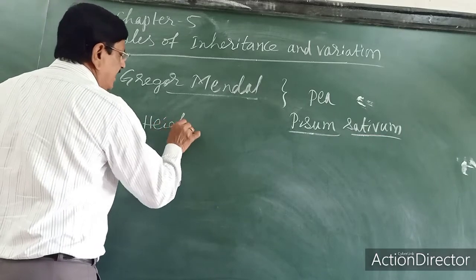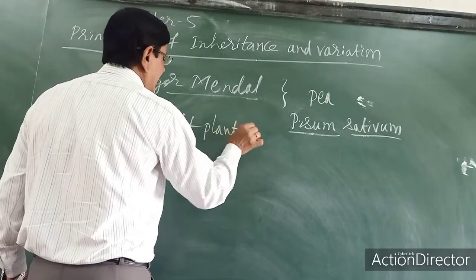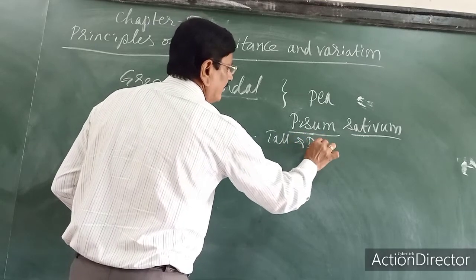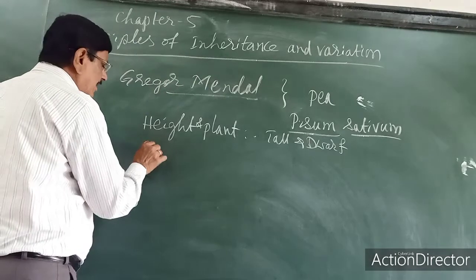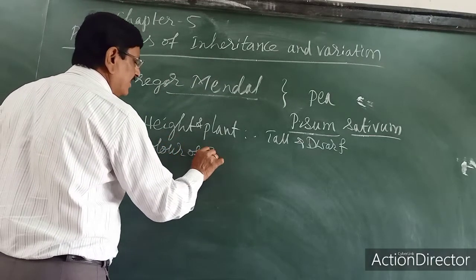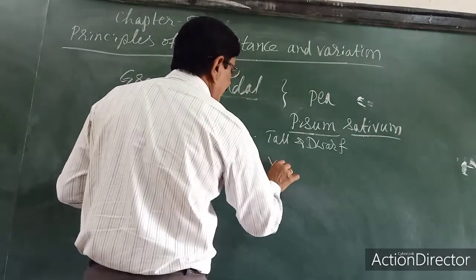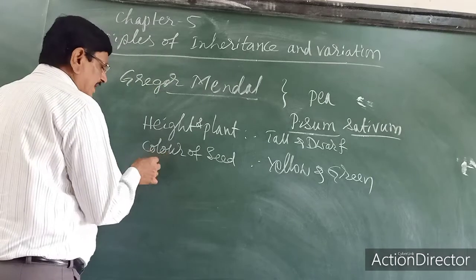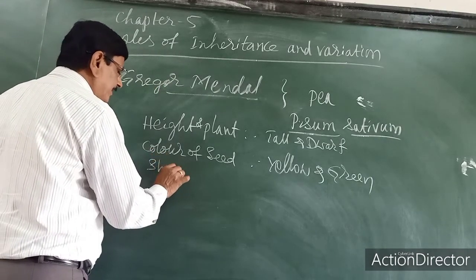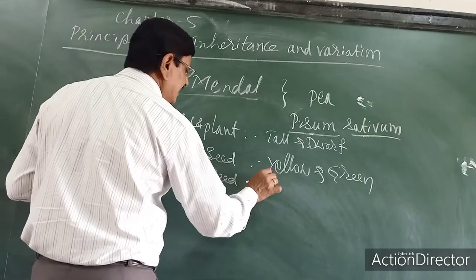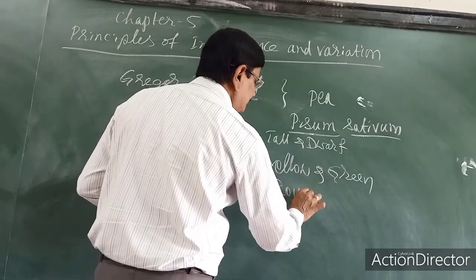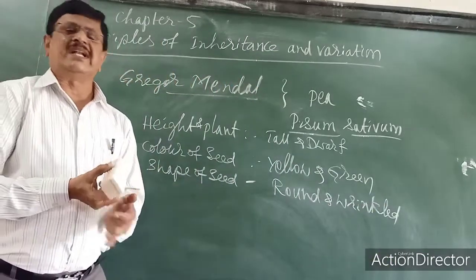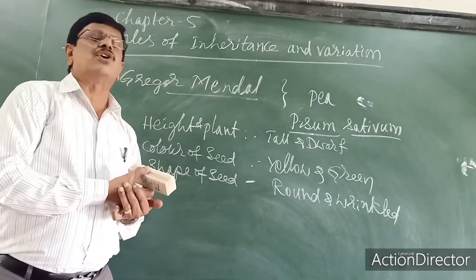The characters he identified include: height of the plant — either tall or dwarf; color of the seed — either yellow or green; shape of the seed — either round or wrinkled. He identified seven characters, and each character has two varieties — seven contrasting characters.